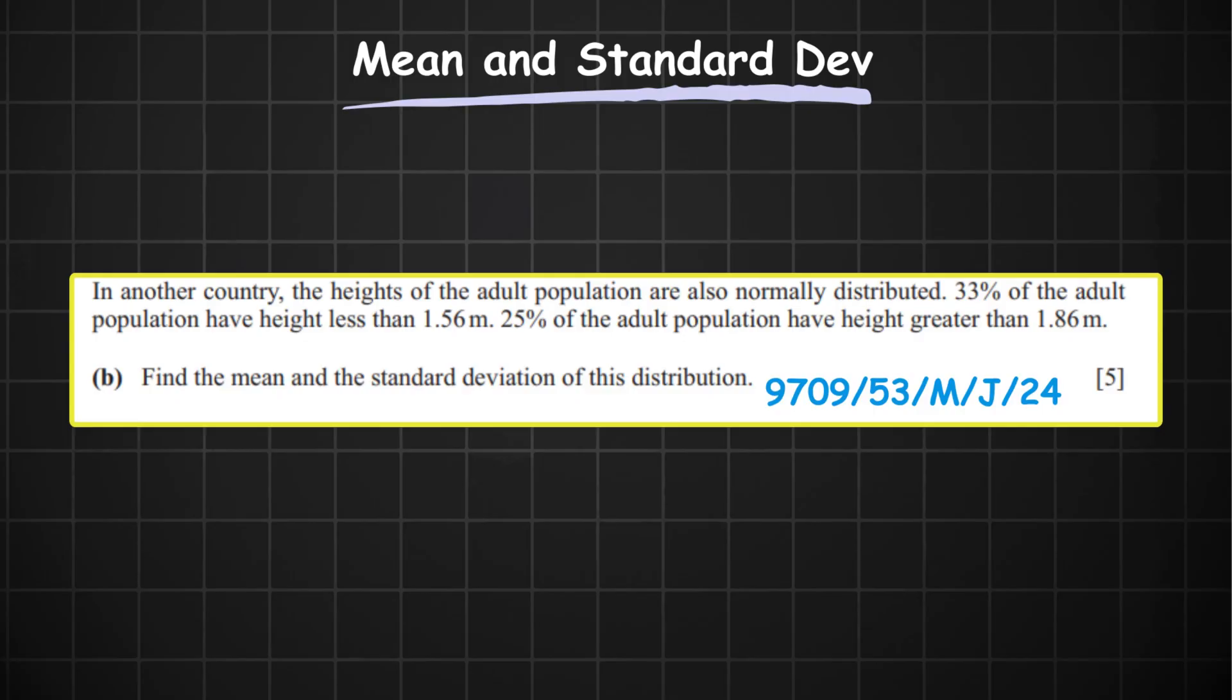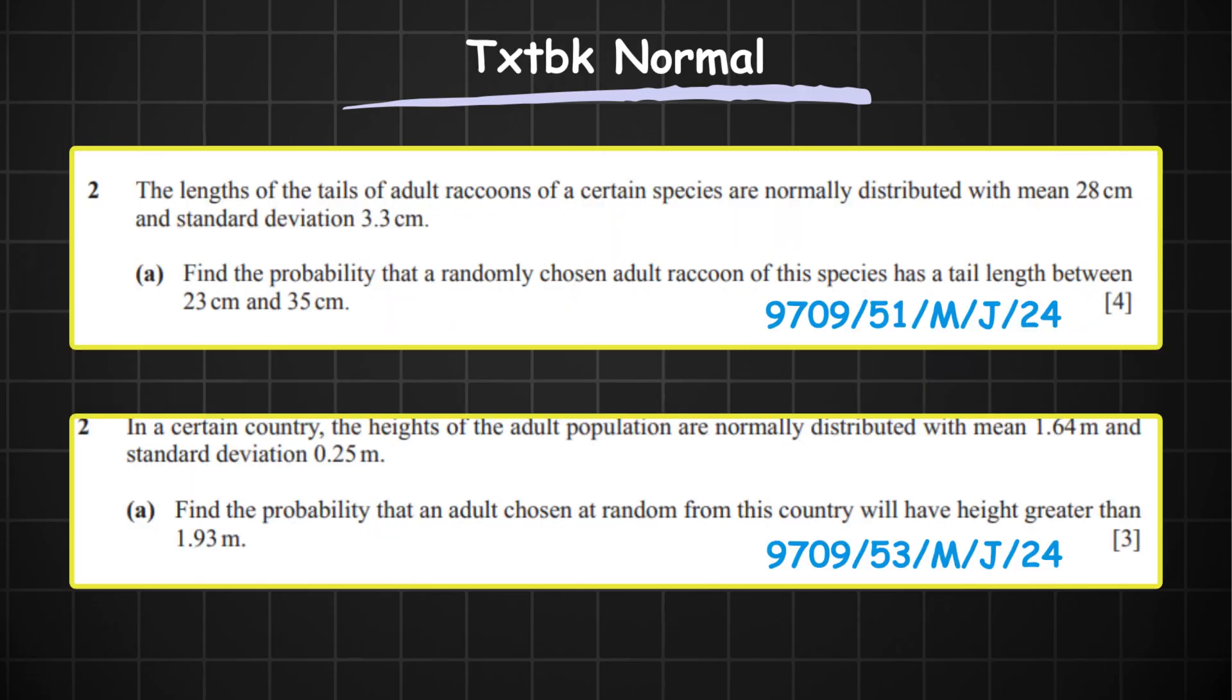And on a side note, this is the only approximation you use at AS level. So don't think too hard when a question asks you to use a suitable approximation. Apart from this, I also have a bit of a hunch that we could also get the find estimates of the mean and standard deviation question. The one that also comes with 5 marks. So prepare for that as well. Then the textbook normal distribution question. I couldn't find a better name for it. It's coming. And I'd like to assume that most of you are comfortable with it. Because it embodies the very basics of the normal distribution.